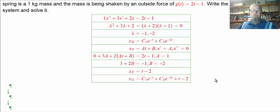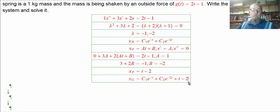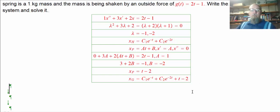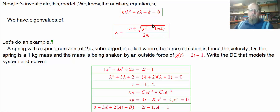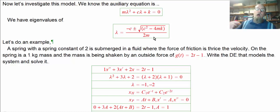If initial conditions were given we could find the constants. Notice that since both eigenvalues are negative, the homogeneous solution dies away as t → ∞, leaving only the particular solution. This is an example of overdamped. In general, all spring problems always yield the same auxiliary equation, and there are three standard cases based on the type of eigenvalues: real and different, real and the same, or complex conjugate.